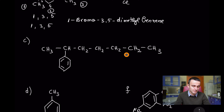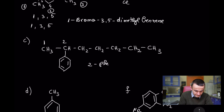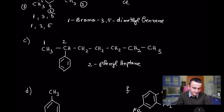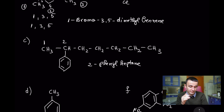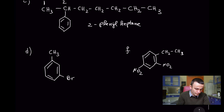Compound C has seven carbons in the chain, so the benzene ring serves as a substituent called phenyl. Counting the chain, the phenyl is at position 2, giving the name 2-phenylheptane. Be careful: if the chain has more than six carbons, benzene goes after as a substituent, not as the parent name.